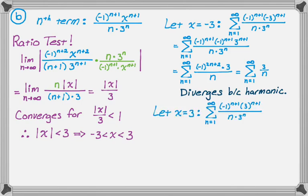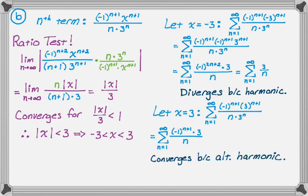At x equals three, substituting gives the sum from one to infinity of negative one to the n plus one times three to the n plus one, over n times three to the n. Three to the n plus one over three to the n is just three, leaving negative one to the n plus one times three over n. This is three times the alternating harmonic series, which is a convergent series. So the interval of convergence includes positive three but not negative three: negative three less than x less than or equal to three.